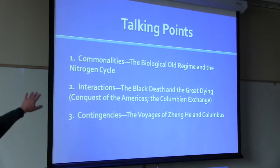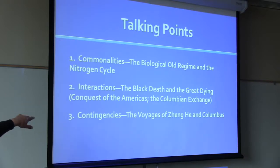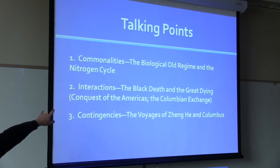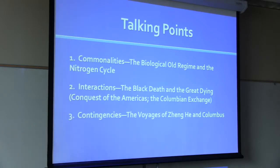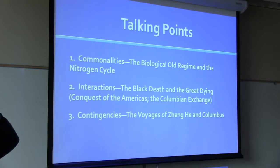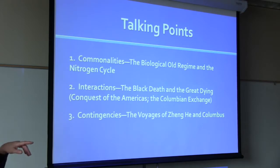The first section covers commonalities — the biological old regime — and I'll explain what that is. Then we'll take a break and do some DBQ work with those documents. Next we have interactions: the Black Death and the Great Dying as similar kinds of events — the Black Death in the middle of the 13th century, and the Great Dying in the Americas as a result of the Columbian Exchange. Then I want to talk about contingencies and how the world got to be the way it is, focusing on the voyages of Admiral Zheng He in the 1400s.